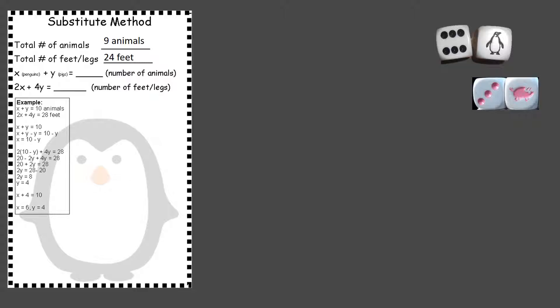Figure out the feet. We now have 24 feet because six penguins is 12 feet. Three pigs is 12 feet. And we now have 24 feet. So we need to plug that into our formula. X plus Y equals nine. And 2X plus 4Y equals 24. So we have that figured out so far. So we put that into our equation. We start to write it out.